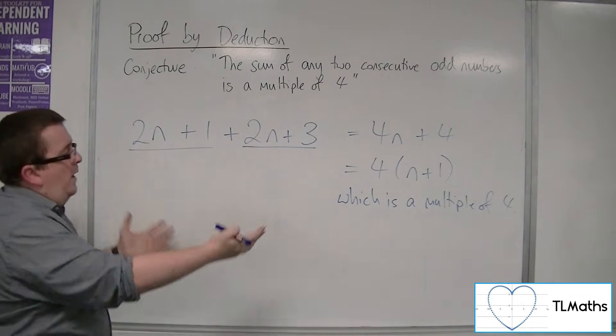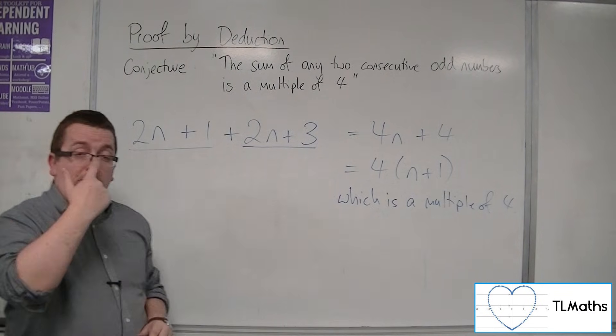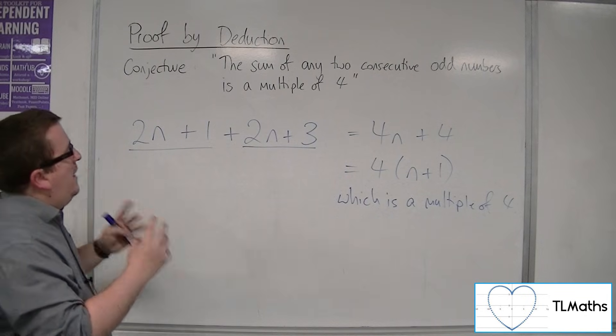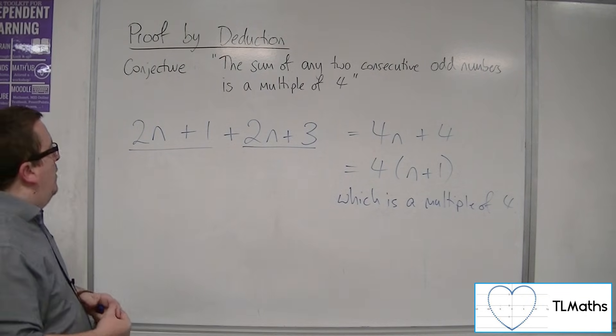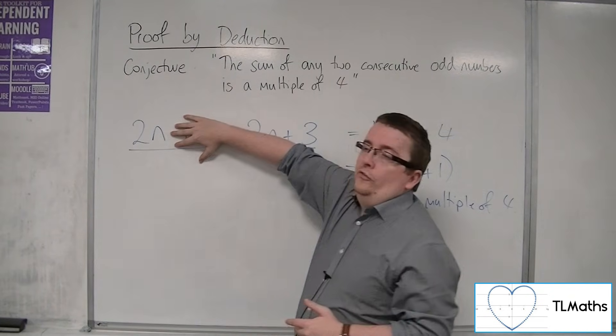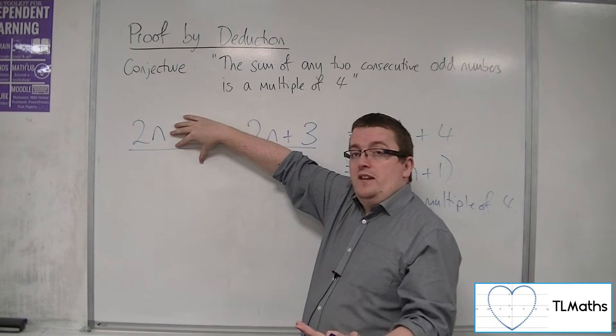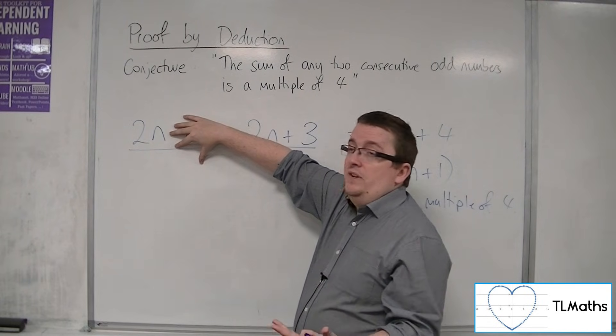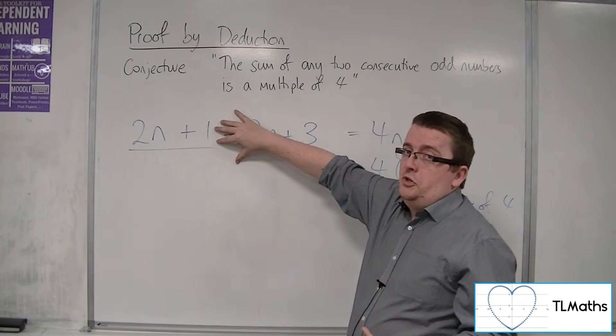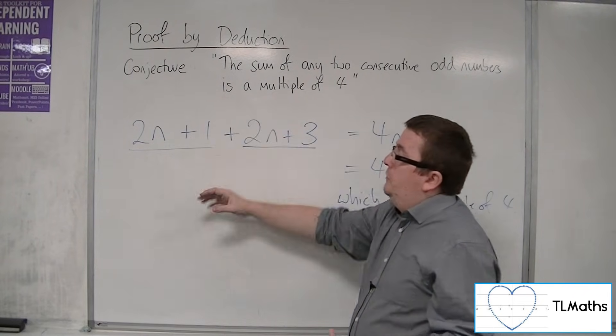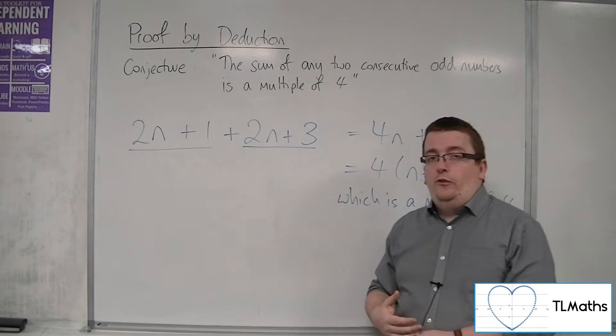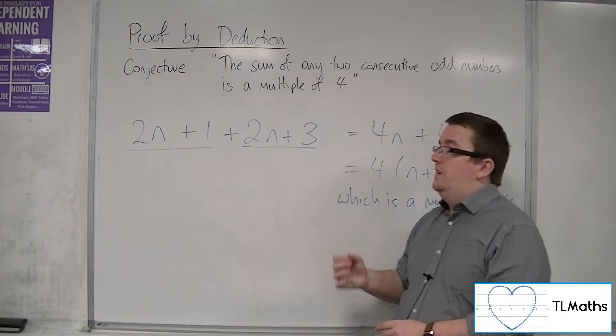This is quite a short example, and we'll go through some more examples in the next video. If I'm going to pick out anything that would be really useful going forward, it was that understanding that 2n was always going to be even. You can write an even number as 2n, and you can write an odd number as 2n+1. The consecutive ones will be like that. That's a really useful thing to remember.